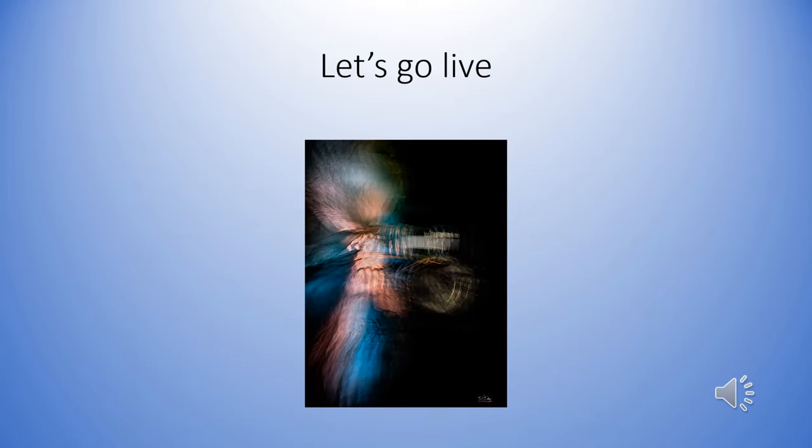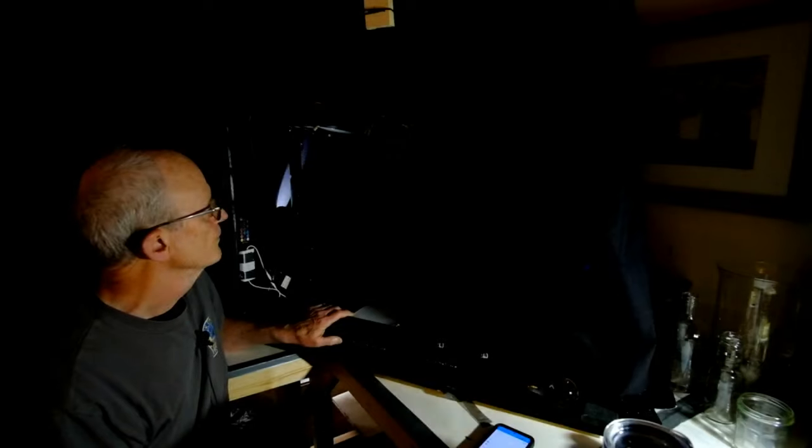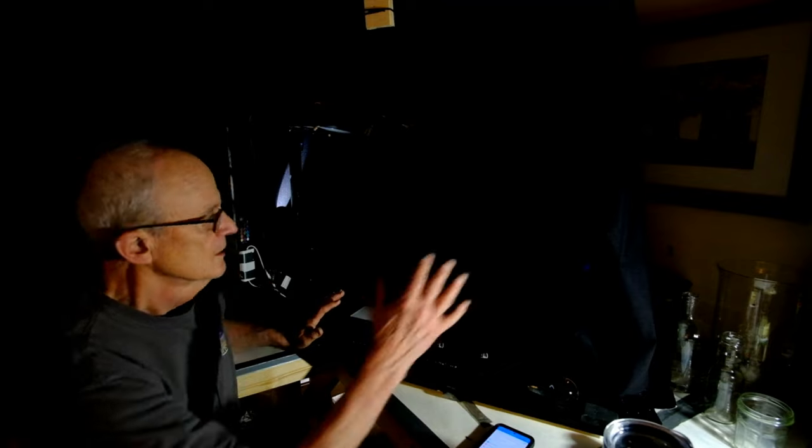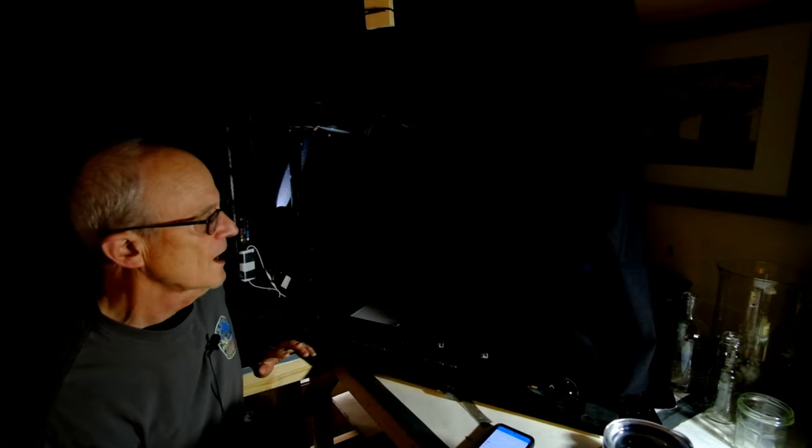That's about enough of the introduction on studio ICM, so let's go live and look at the processes I use to create my images. Here is a good example — one of my favorites — I call it 'bouncing a ball.' Please remember this image because we're going to talk about several techniques related to it throughout this presentation. We'll start with a discussion of my studio and how it's set up. This is the studio in its entirety — nothing more than a wooden framed box.